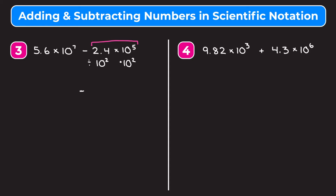If I divide 2.4 by 10 squared, I need to move the decimal point two places to the left, so it becomes 0.024. And when I multiply 10 to the fifth times 10 squared, it becomes 10 to the seventh. So 2.4 times 10 to the fifth is the same as 0.024 times 10 to the seventh. I'm going to keep my original number the same: 5.6 times 10 to the seventh. And now we can just subtract the two numbers in front.